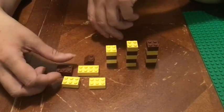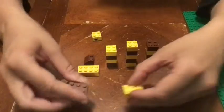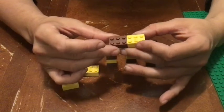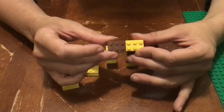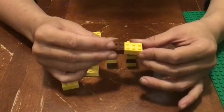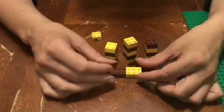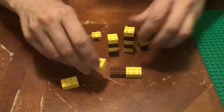I want my giraffe's body to be six studs long, so I'm going to use two two by threes next to each other. One is brown and one is yellow, so again that's working on making it patchy.